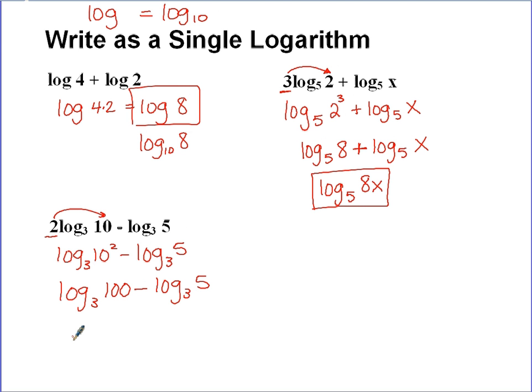This is subtracting 2 logs, so if I'm going to combine these down into a single logarithm it reminds me of the quotient rule or quotient property. So I can combine these as log base 3 of 100 over 5. 100 divided by 5 is 20, so this is log base 3 of 20.